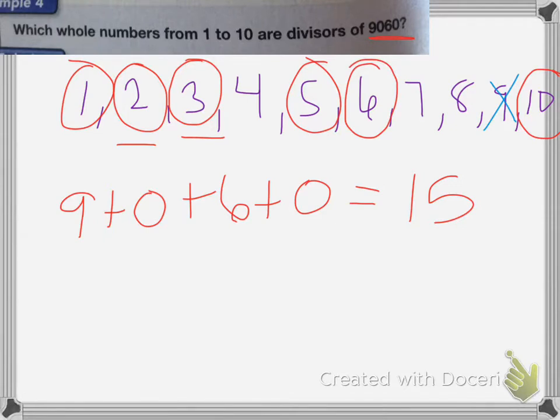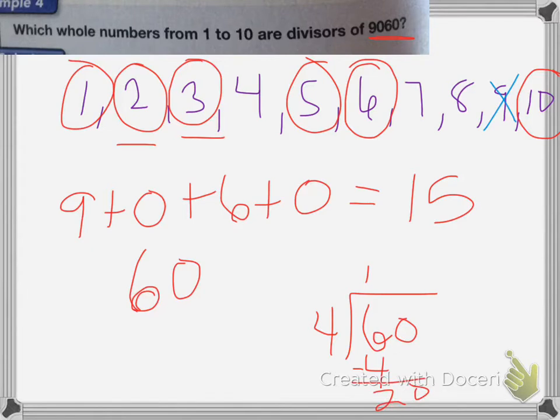With 4, the last 2 digits can be divided by 4. So the last 2 digits of my number are 60. So we tried dividing 60 by 4. It goes into it once, 4, 2, 0, that's 5. So yes, so it can also be divided by 4.